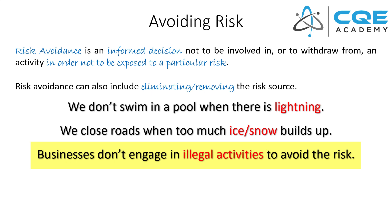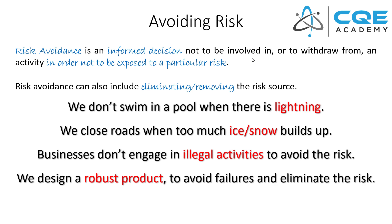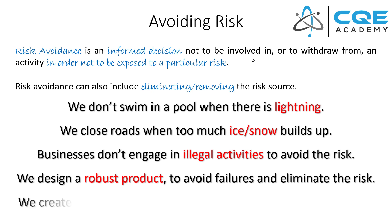In business, companies don't engage in illegal activity to avoid risk. They make an informed decision not to be involved in illegal activity because it comes with business risk, financial risk, or compliance risk — you can avoid that risk by simply making an informed decision. The reason we design robust products is to avoid failures and eliminate the risk associated with those failures.